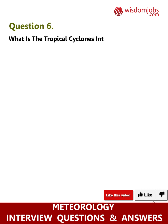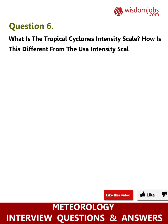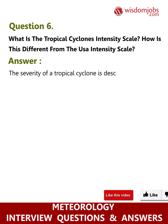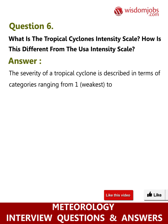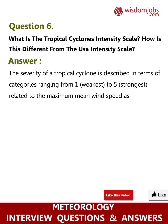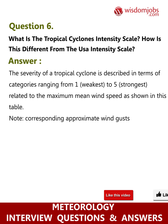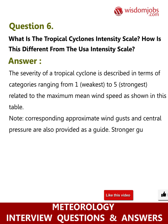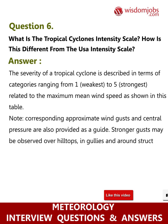Question 6: What is the tropical cyclone intensity scale, and how is this different from the USA intensity scale? The severity of a tropical cyclone is described in terms of categories ranging from 1 (weakest) to 5 (strongest), related to the maximum mean wind speed as shown in the table. Corresponding approximate wind gusts and central pressure are also provided as a guide. Stronger gusts may be observed over hilltops, in gullies, and around structures.